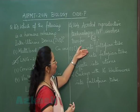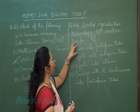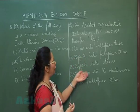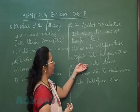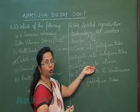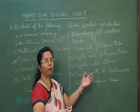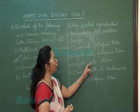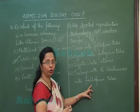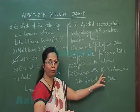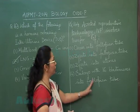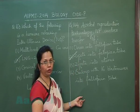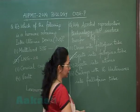Evaluating the options: transferring the ovum into the fallopian tube is wrong — after IVF it will be the zygote, not the ovum. Zygote into the fallopian tube is correct. Zygote into the uterus is wrong — it would be a more-than-eight-blastomere stage transferred to the uterus. An embryo with sixteen blastomeres into the fallopian tube is also wrong, as only up to the eight-blastomere stage is transferred there. The correct answer is option 2.